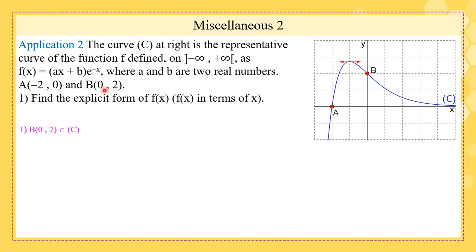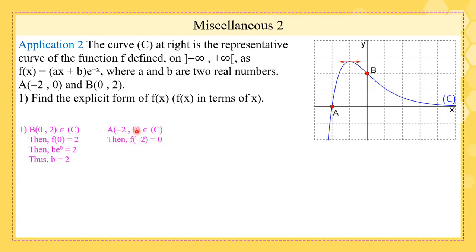Starting with point B, since B belongs to C this means f(0) = 2. Replacing x by 0 in f(x): a·0·b·e⁰ = 2, and since e⁰ = 1, we get b = 2. For point A(−2, 0), f(−2) = 0. Replacing x by −2: (−2a + 2)e² = 0. Since e² is never zero, we get −2a + 2 = 0, so a = 1.